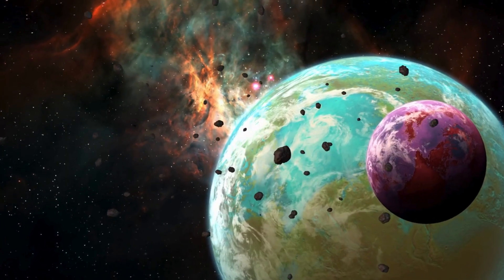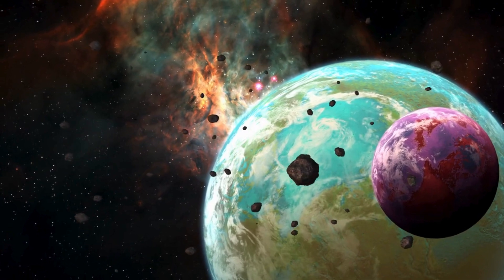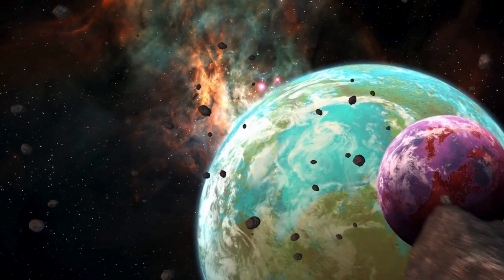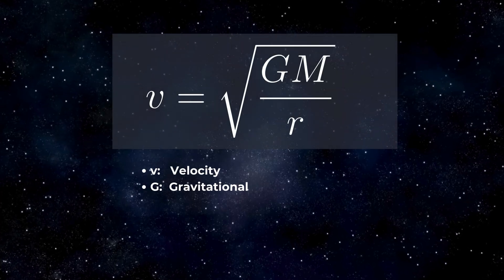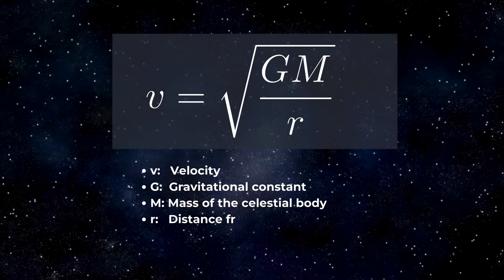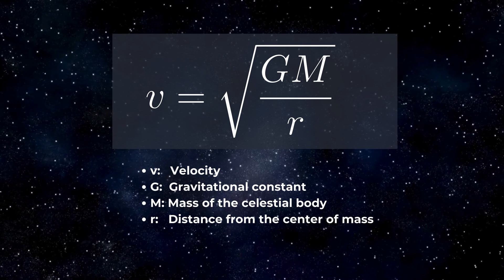This idea is about how fast something goes when it's going around a planet. As that something goes farther away from the planet, it slows down. There's a formula that shows this, and if we apply it to objects going around the Earth, we see that the farther they are, the slower they go.